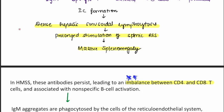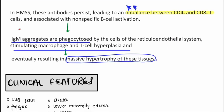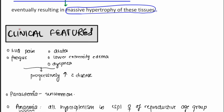There is dense hepatic sinusoidal lymphocytosis, which leads to prolonged stimulation of splenic reticuloendothelial cells, causing massive splenomegaly. These antibodies persist and lead to an imbalance between CD4 and CD8 cells, associated with non-specific B cell activation. The IgM aggregates are phagocytosed by cells of the reticuloendothelial system, stimulating macrophage and T cell hyperplasia, eventually causing massive hypertrophy of these tissues.